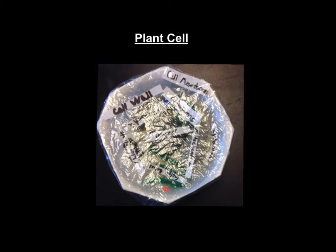So unlike the animal cell, the cell membrane in this cannot move. These long green things right here are my Golgi bodies. They create molecules to either store in the cell for later or send out of the cell. This thing right here is a ribosome. It creates proteins that help the other parts of the cell do their job. And that is my plant cell. Thanks for watching my cell model project.